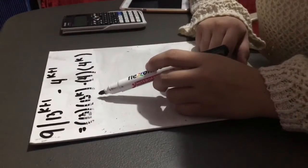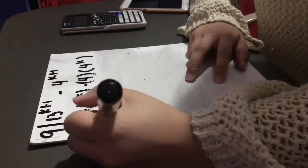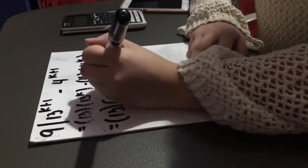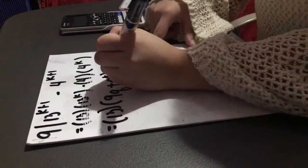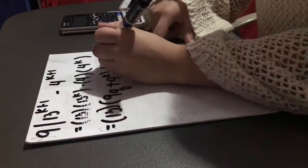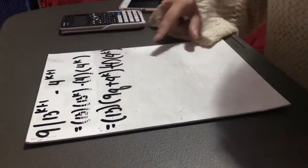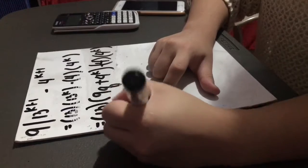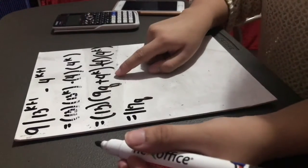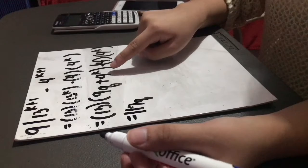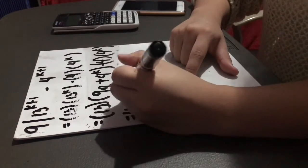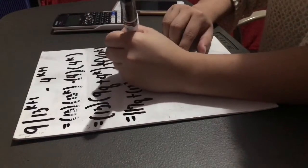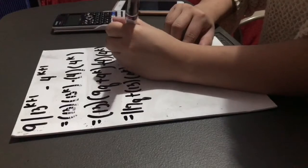We will now substitute the new equation: 13 times (9q plus 4 raised to k), then copy the remaining part: minus 4 times 4 raised to k. We multiply 13 and 9q to get 117q. Since we cannot multiply 13 by 4 raised to k directly, it becomes plus 13 times 4 raised to k, minus 4 times 4 raised to k.